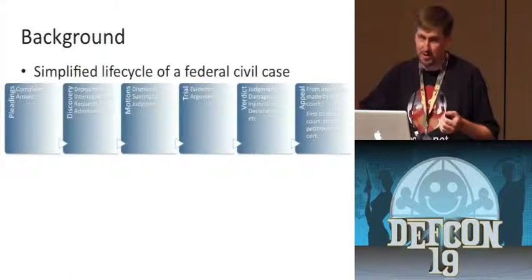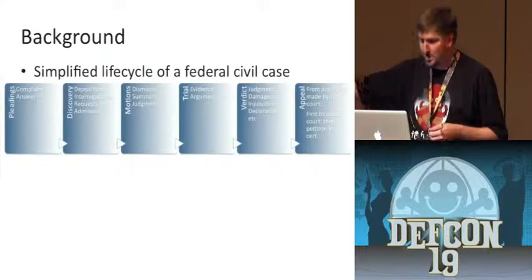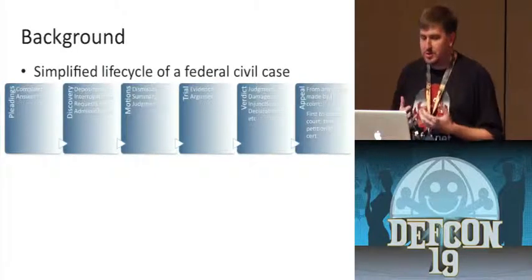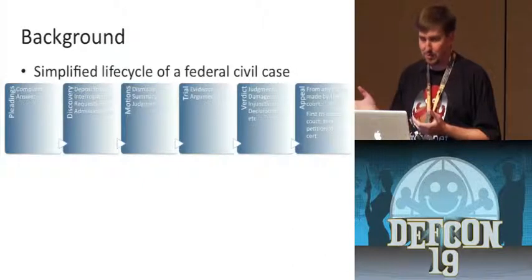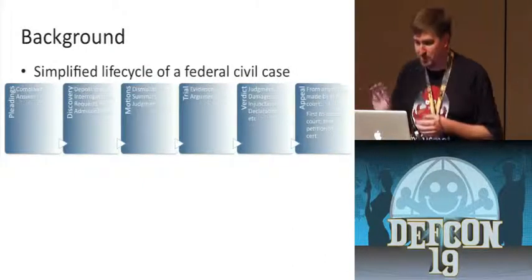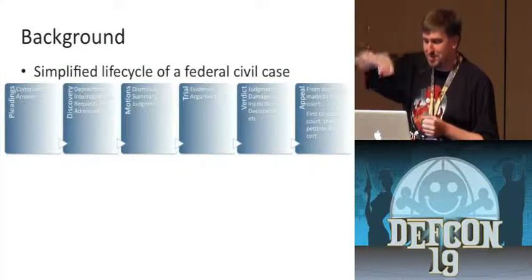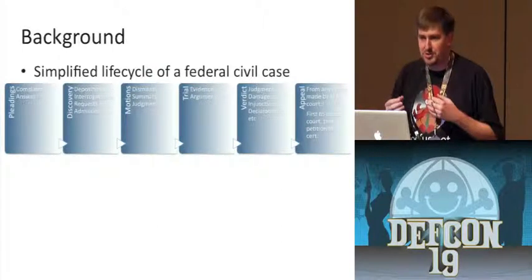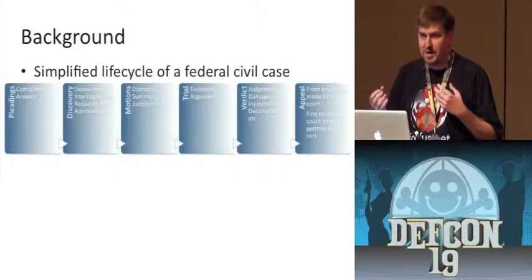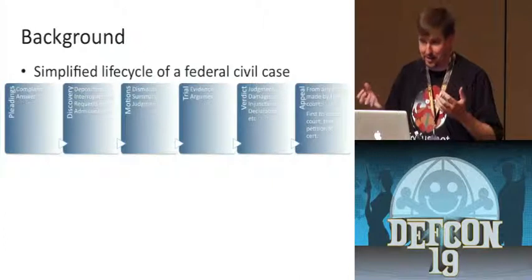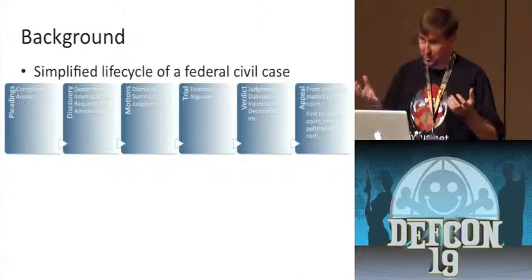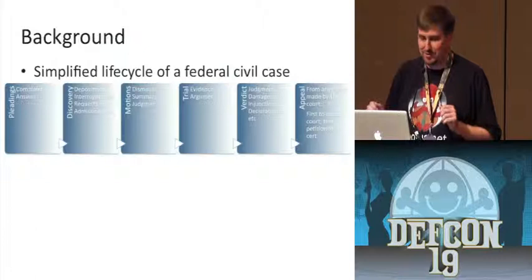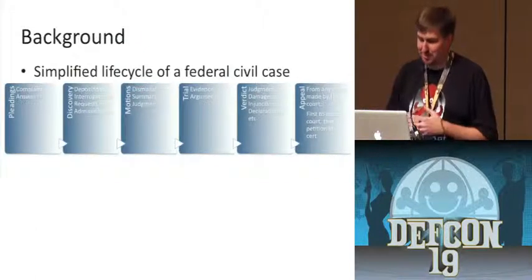Someone will file a complaint and the other person will have to file an answer — "you wronged me," "hell no I didn't" — and then the battle is joined. Then we begin a phase called discovery, which is designed to keep the case out of court. Discovery involves depositions, interrogatories, requests for admission, and so forth. The parties exchange information so each can size up what the other's case looks like. If you're a defendant and the plaintiff has a really strong case, you might want to settle. On the other hand, if you think the case has no merit, you can try to persuade the plaintiff of that.